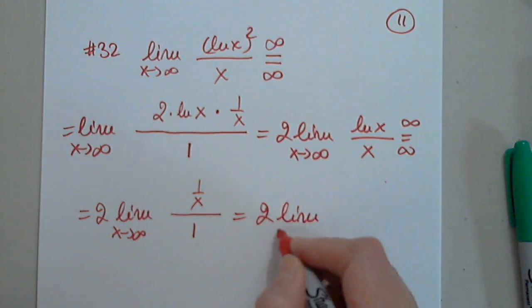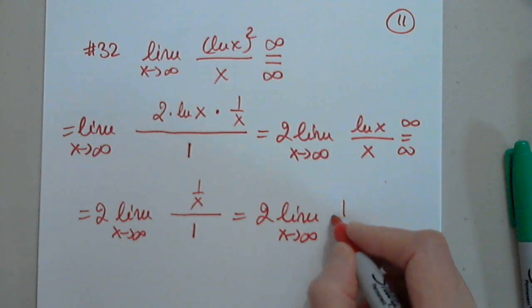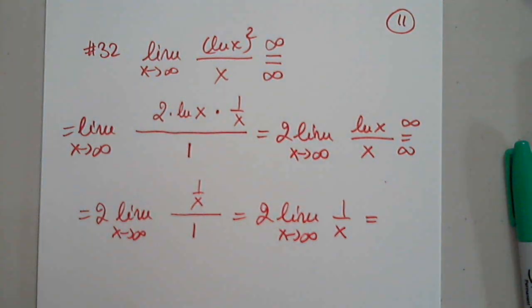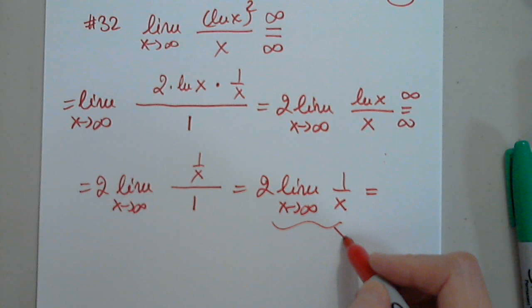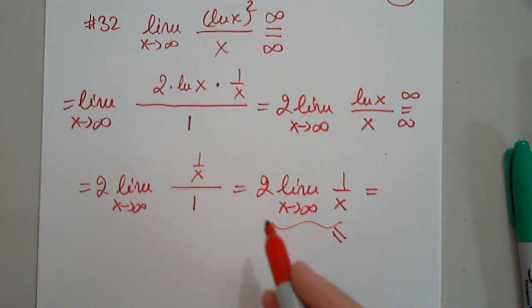So this is 2 limit as x approaches infinity of 1 over x. Where does this go? What is this? And then times 2.